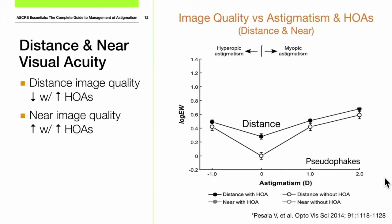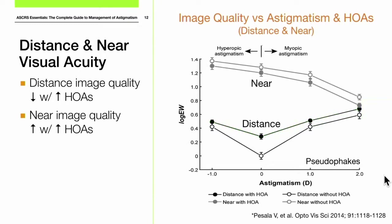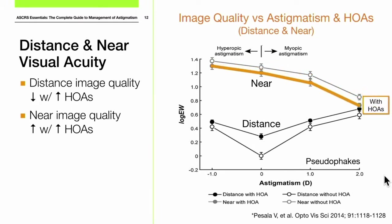Looking at image quality for astigmatism: for distance acuity, if we look at the pure effect of astigmatism without higher-order aberrations and then add those aberrations in, we see a worsening effect on distance acuity. But for near acuity, the addition of higher-order aberrations actually produces a little bit of improvement in near visual acuity.